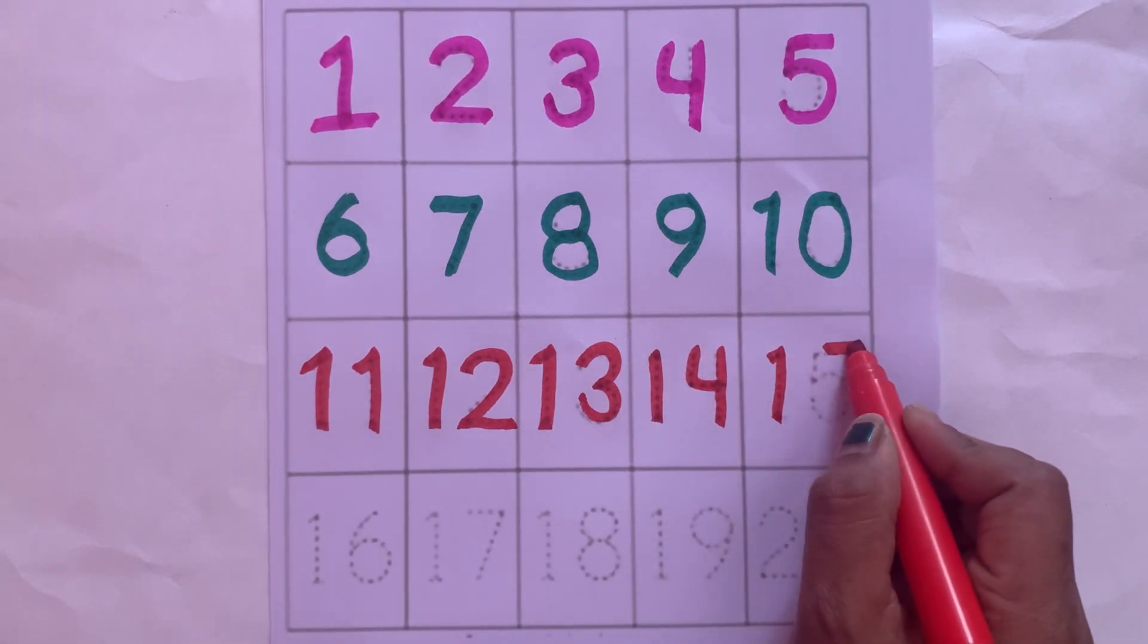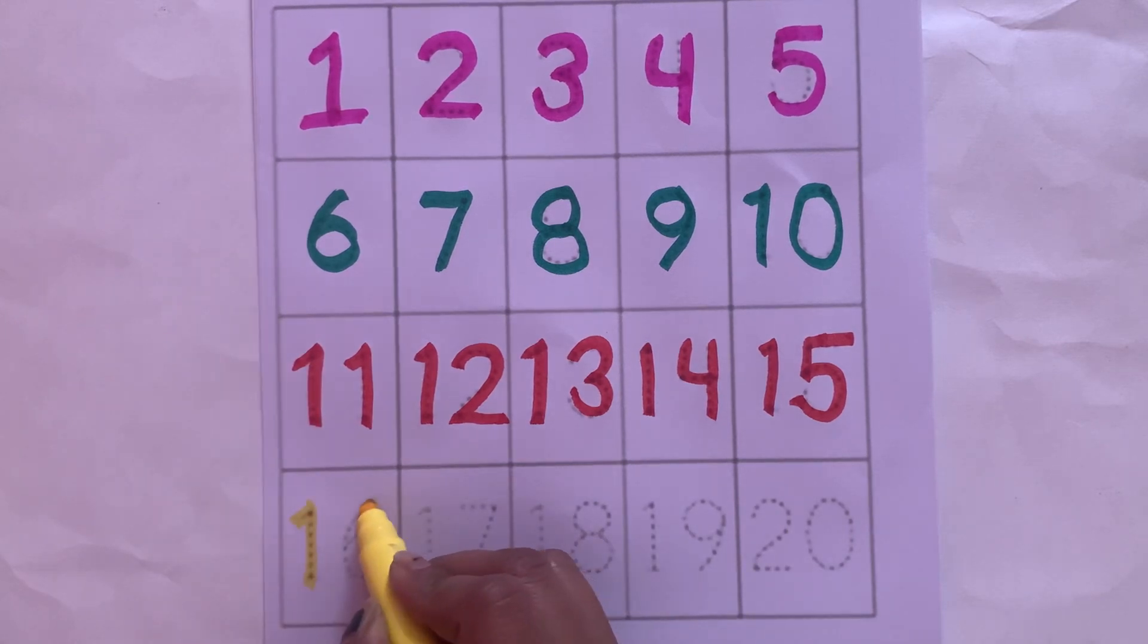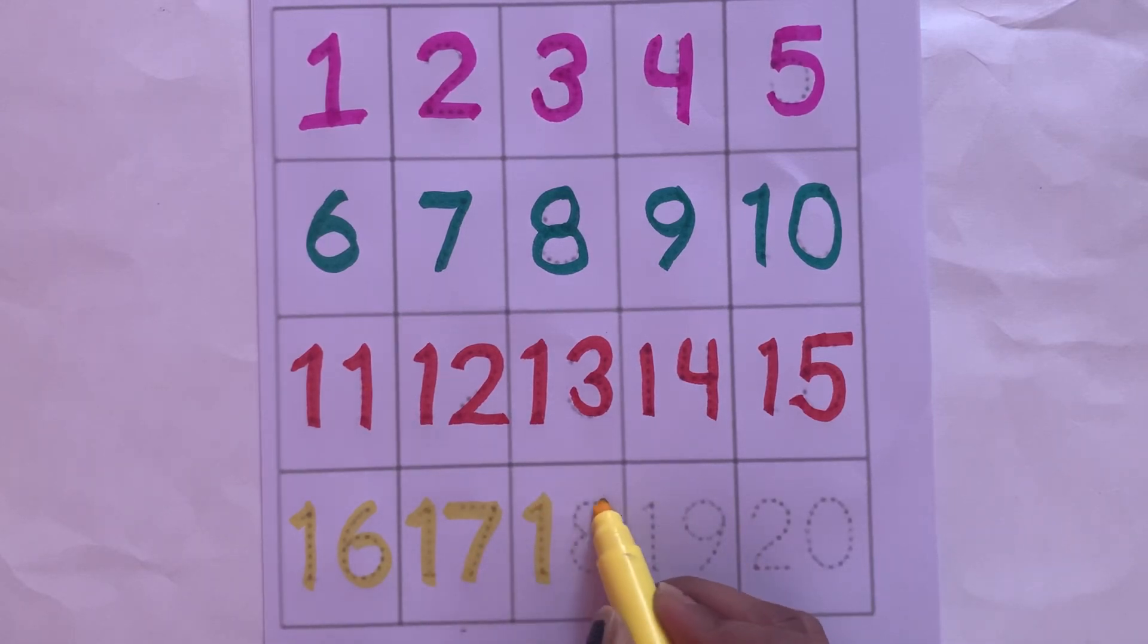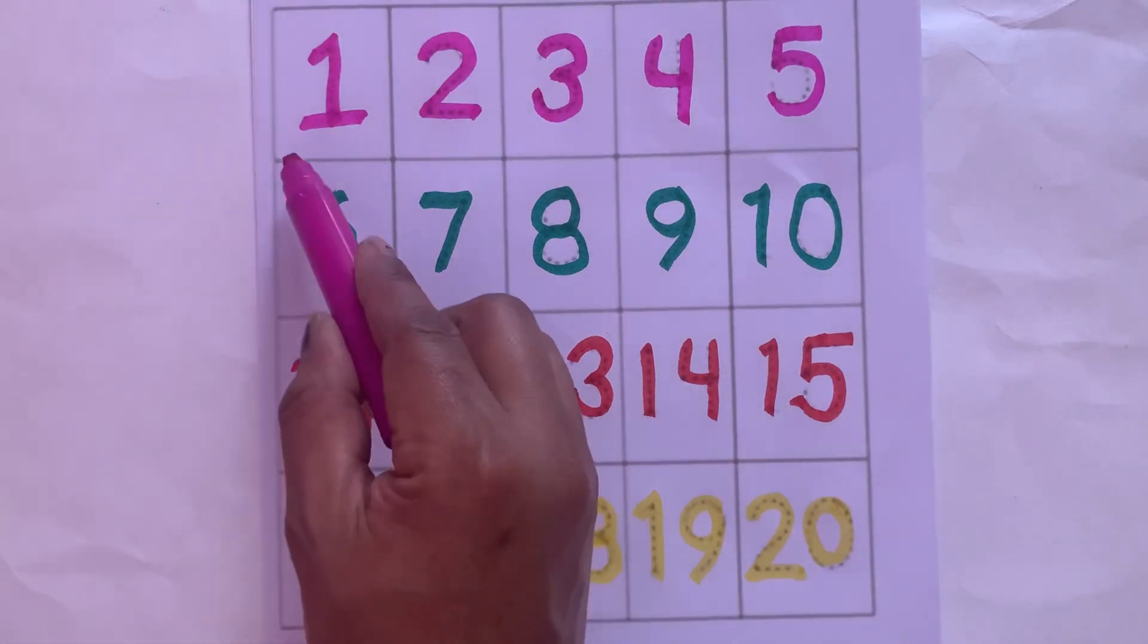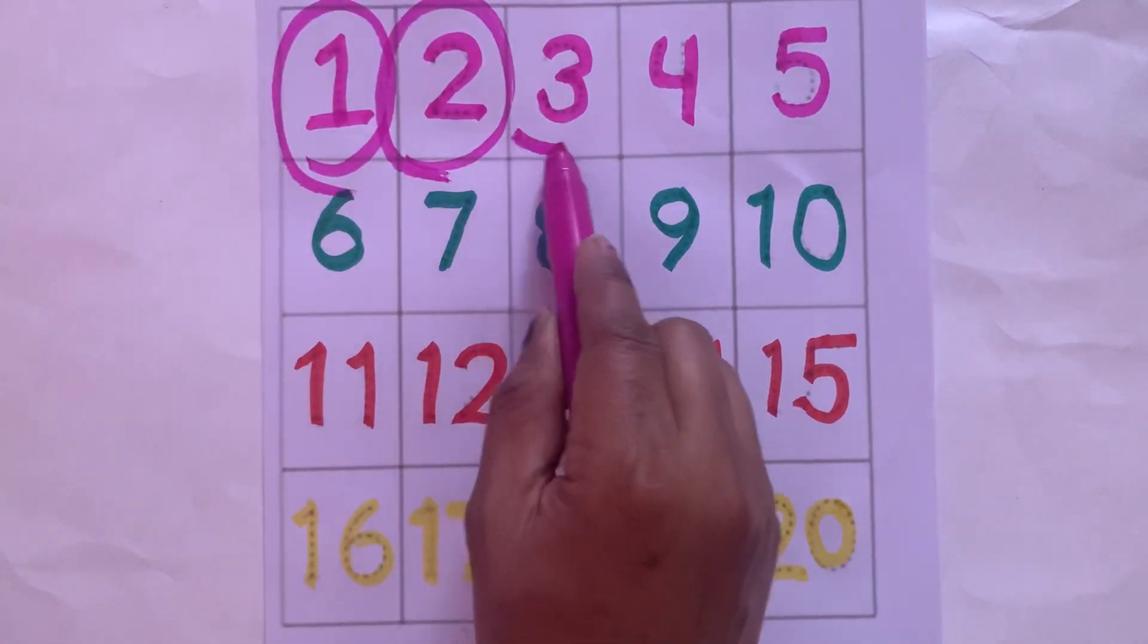One five - fifteen, one six - sixteen, one seven - seventeen, one eight - eighteen, one nine - nineteen, two zero - twenty. One, two, three, four, five.